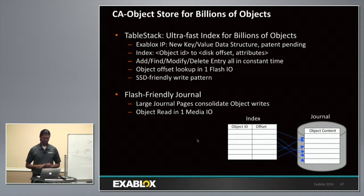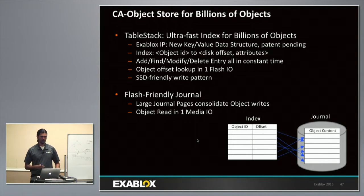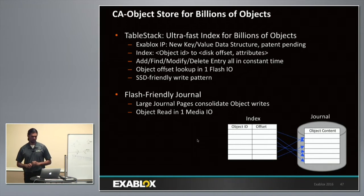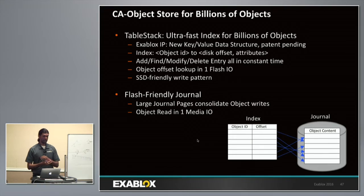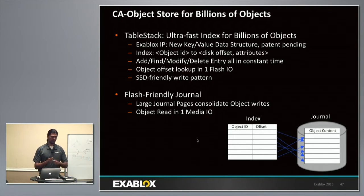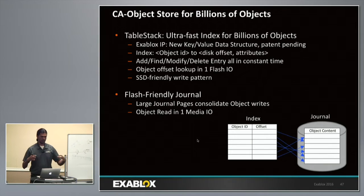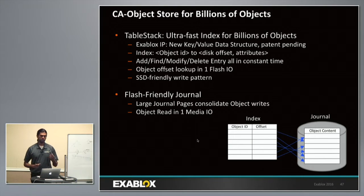This is patent-pending work. Finding, adding an entry, modifying, deleting — everything is order one, or constant time in computer science terms. The journal, which is where the objects are actually stored, is very media-friendly for both flash and spindles. When writing out objects, we write multiple objects at a time because you don't want to be doing small random writes on either spindles or flash. We consolidate object writes into journal pages, but when you need to fetch an object it's just one media IO.